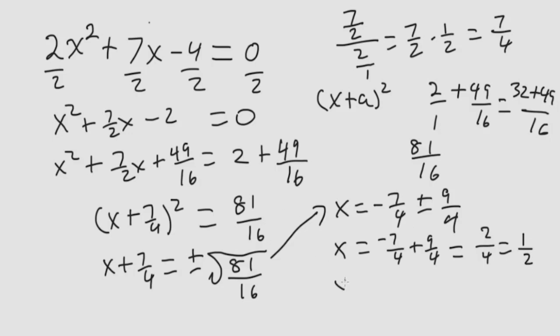And we have x is equal to negative 7 fourths, minus 9 fourths, which is equal to negative 16 over 4, which is equal to negative 4.